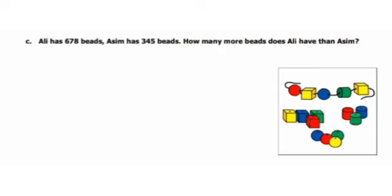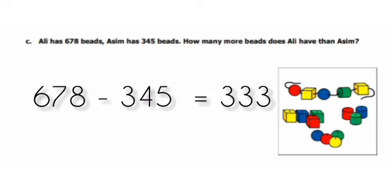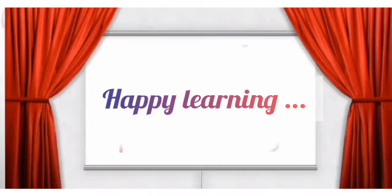Now we solve the worksheet question: Ali has 678 beads and Asim has 345 beads. How many more beads does Ali have than Asim? We do simple subtraction: 678 minus 345 equals 333. I hope students you understand this concept. Do practice at home and check yourself. Allah Hafiz.